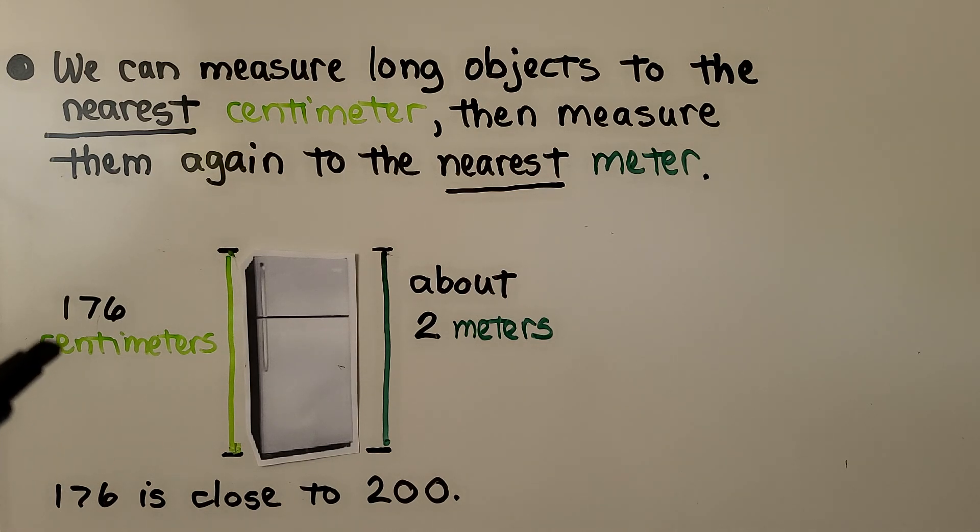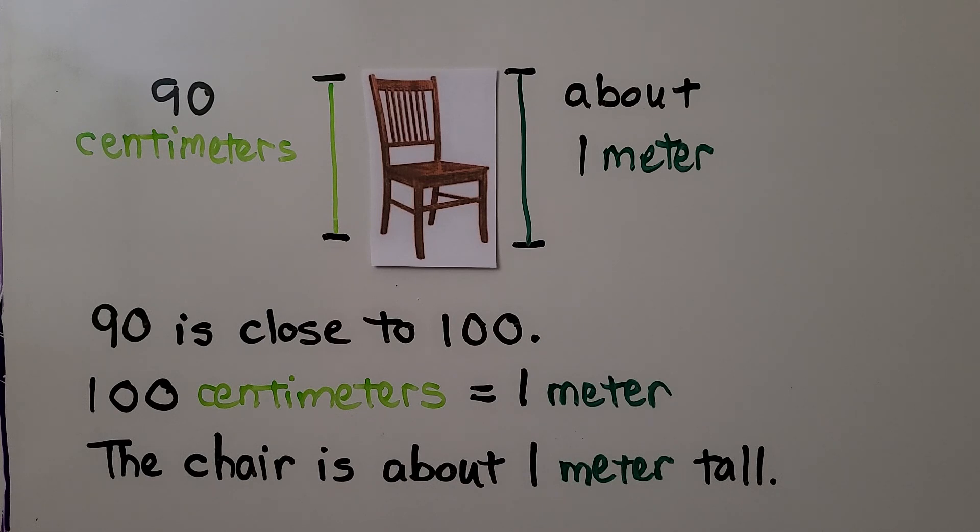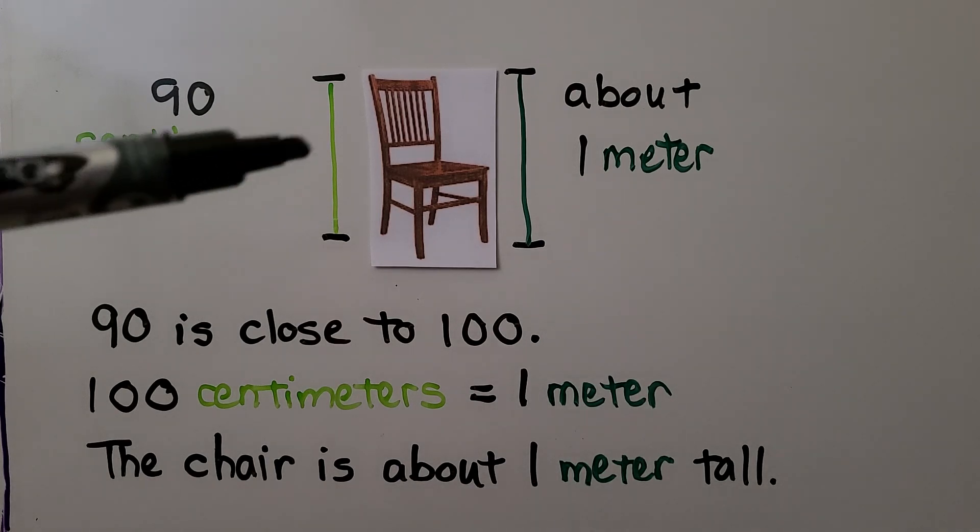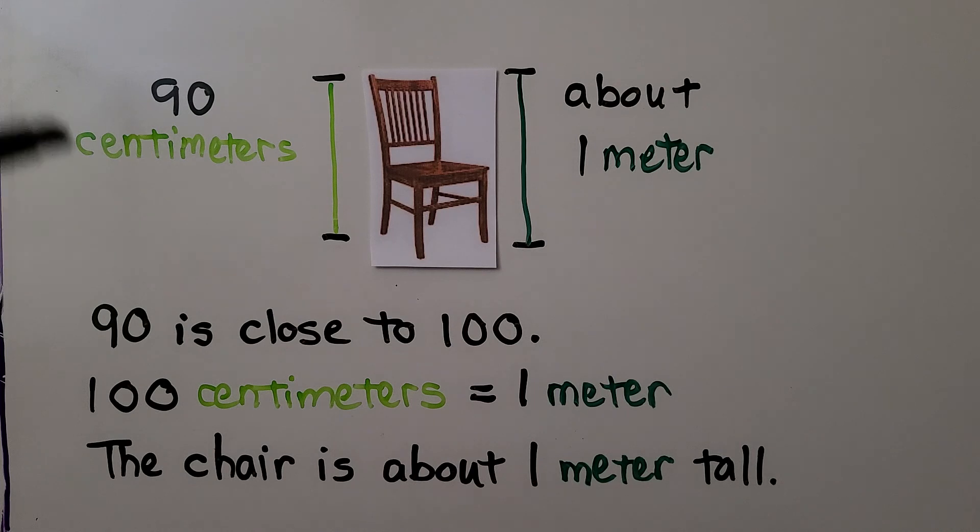If there's 100 for each meter and this is close to 200, it's about two meters. If we measure the chair and it's 90 centimeters, that's about one meter because 90 is close to 100. 100 centimeters is equal to one meter, so the chair is about one meter tall.